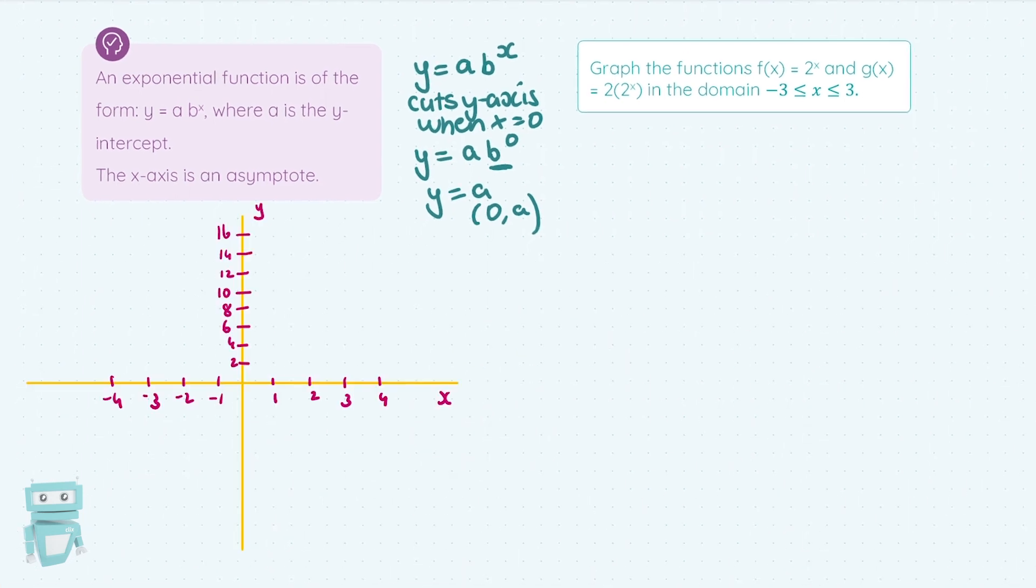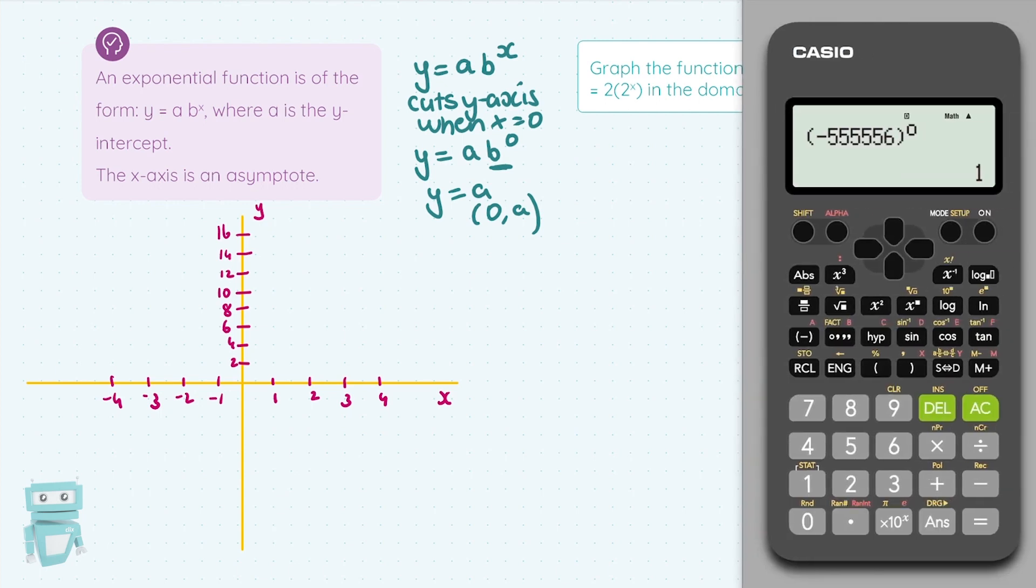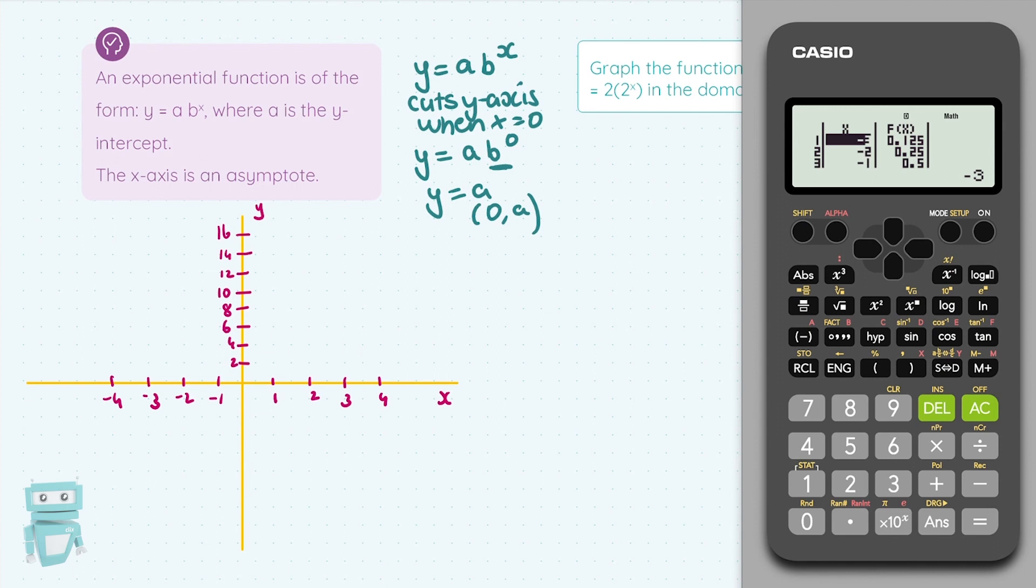The first one we'll draw, I've just got my wee axis teed up, is f of x equal to 2 to the power of x. So calculator out, go to mode 3, type in your function, it's 2 to the power of x. Here all we're doing is alpha in the right bracket. We're going from minus 3 to 3 in the domain. So start at minus 3, press equals, end at 3, and we'll go up in 1s. So we're going to minus 3, minus 2, minus 1, 0, 1, 2, 3. And that spits out this.